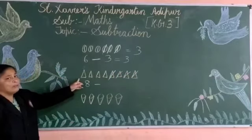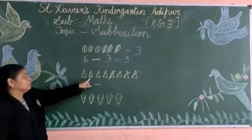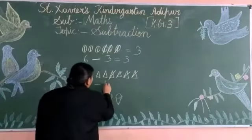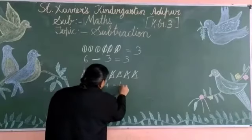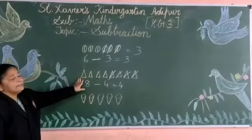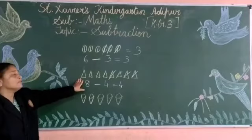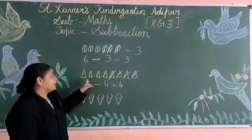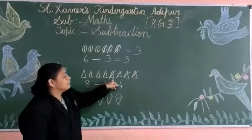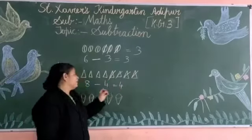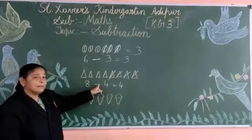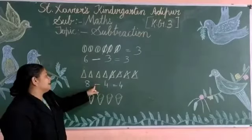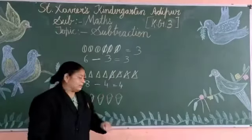Now remain how many are there? 1, 2, 3, 4. Jitna bacha? Woh hai number 4. Kitne triangles bacha gaya abhi aapke paas? 4. 8 triangles tha, and aapne us mein se 4 triangles ko cut kiya. Abhi aapke paas kitna bacha gaya? Remain how many triangles? Yes, there are 4 triangles now.